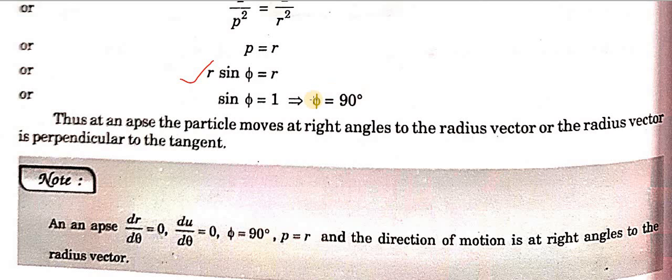So at an apse, the angle φ is 90 degrees, meaning the particle moves in a direction perpendicular to the radius vector — or equivalently, perpendicular to the tangent at that point.